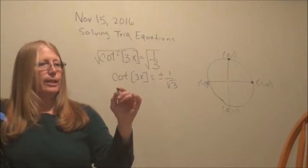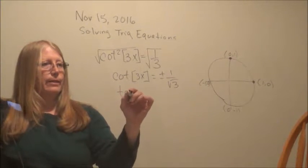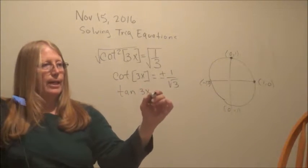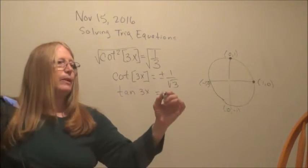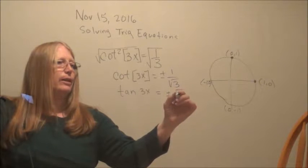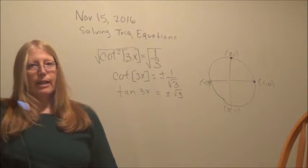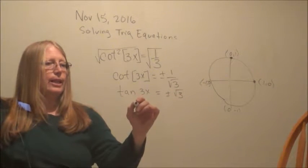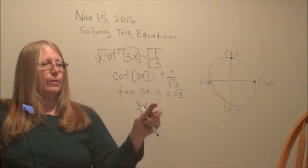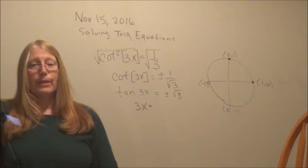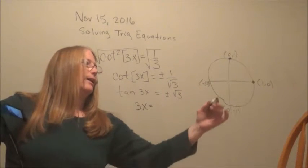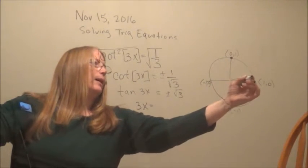Now I prefer to work in tangent, so I'm going to flip this upside down. So 1 over the square root of 3 becomes plus or minus the square root of 3 over 1. Alright, so where does 3x, what will 3x have to equal so that the tangent of it is square root of 3, plus or minus? So I like to check these spots.